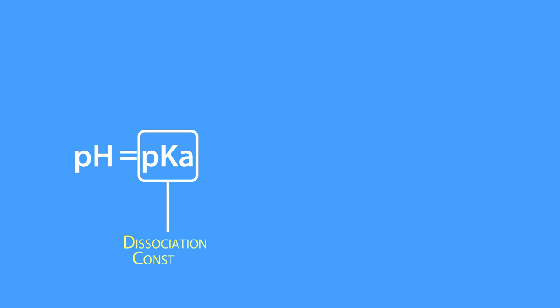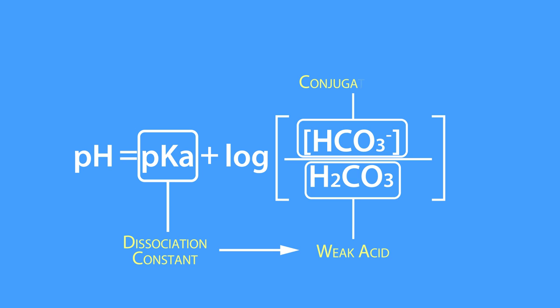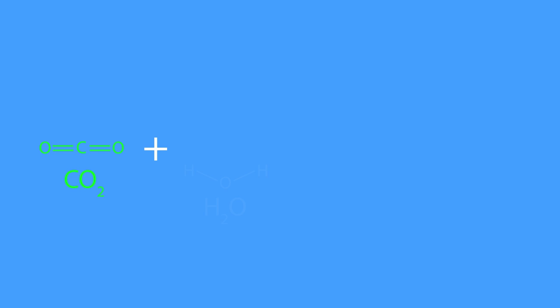The Henderson-Hasselbalch equation was derived from this basic equation where pH equals the pKa or dissociation constant of the weak acid—in this case carbonic acid—plus the log of the conjugate base, which in this case is bicarbonate.